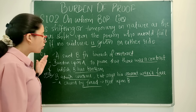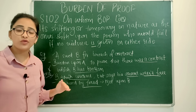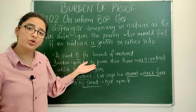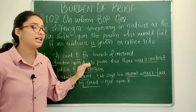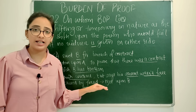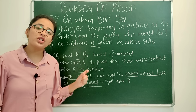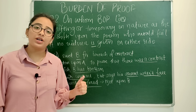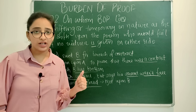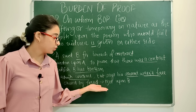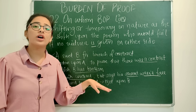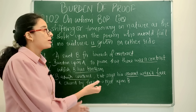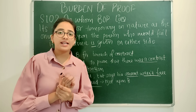This is what section 102 talks about — the onus of proof, or the shifting of the burden of proof from one party to another. The shift happens and onus of proof remains on the party who would lose the case if no evidence is given. Now let's see the next section — section 103.